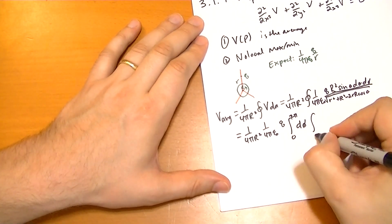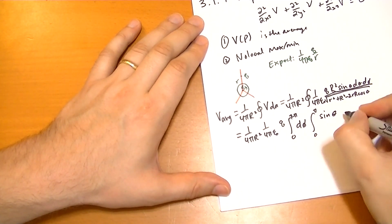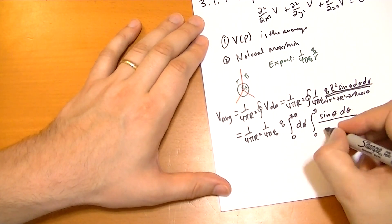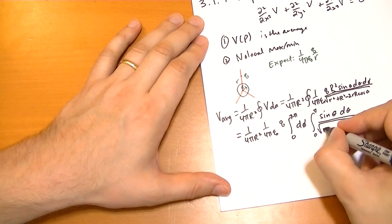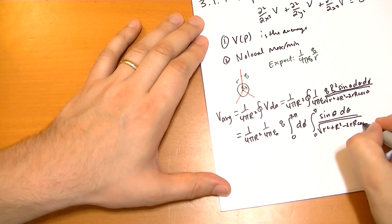And the integral from 0 to pi of theta, so we're going to have sine theta d theta all over the square root of r squared plus r squared minus 2rR cos theta.